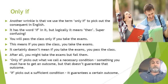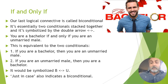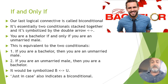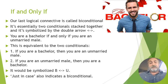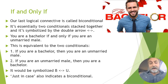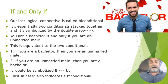Our fifth and final operator is the biconditional — 'if and only if.' It's essentially two conditionals stacked together, with the arrow pointing both ways. 'You are a bachelor if and only if you are an unmarried male' is equivalent to: 'if you're a bachelor, you're an unmarried male' AND 'if you're an unmarried male, you're a bachelor.' Symbolized as B ↔ U. Another English expression for biconditional is 'just in case.'